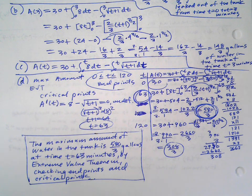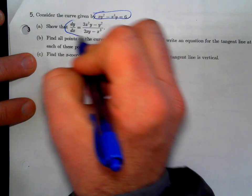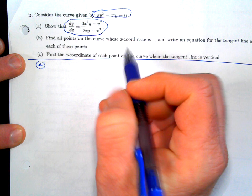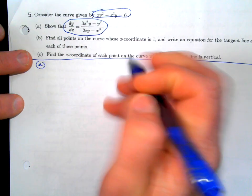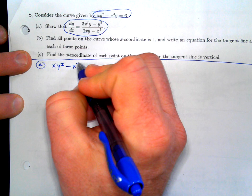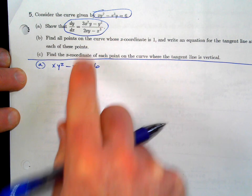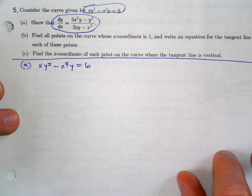The next problem gives you a curve not written as y in terms of x, and says to show that dy/dx equals a given expression. That means take the derivative implicitly and show you get that answer. You have to use implicit differentiation — notice the answer has y's in it, which happens with implicit differentiation.